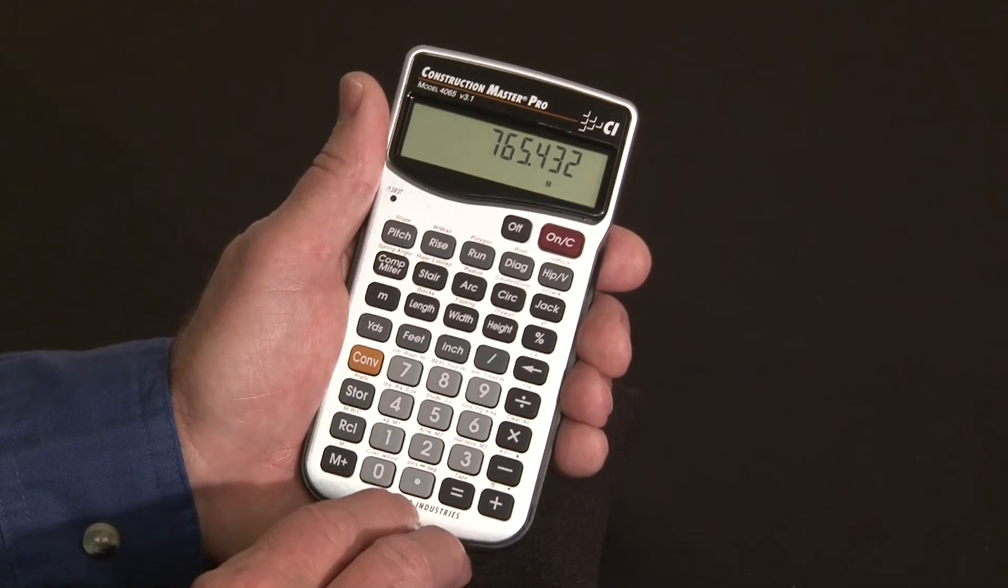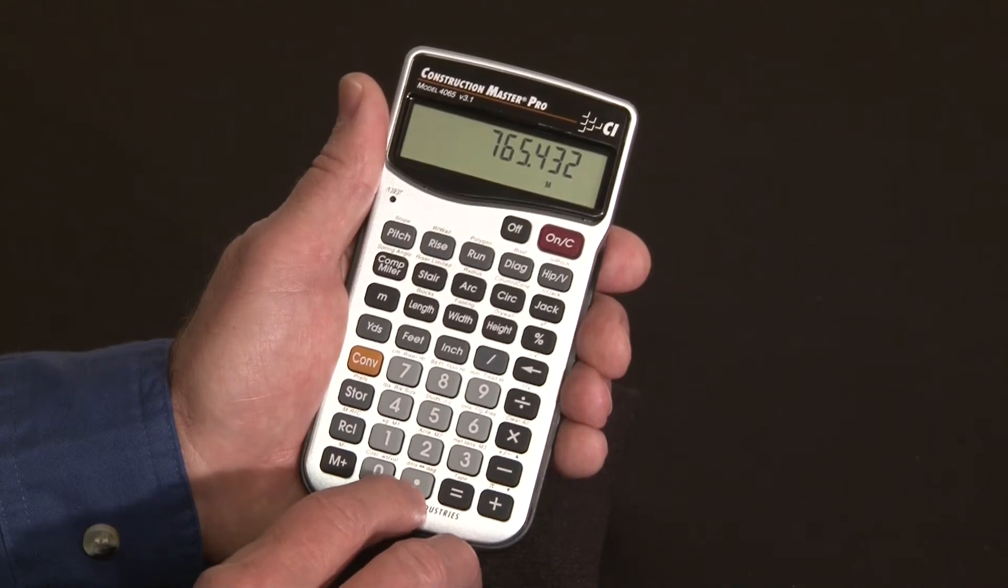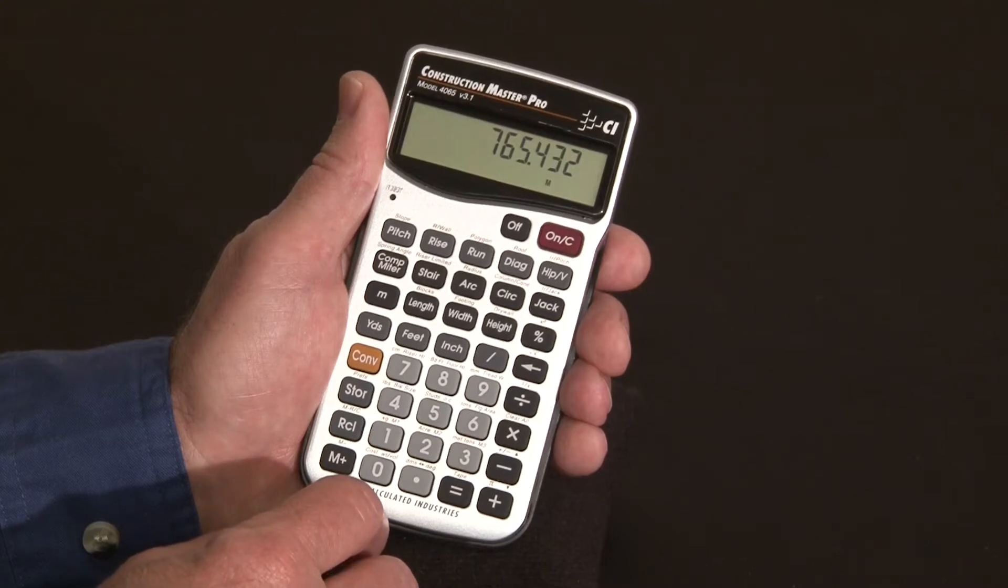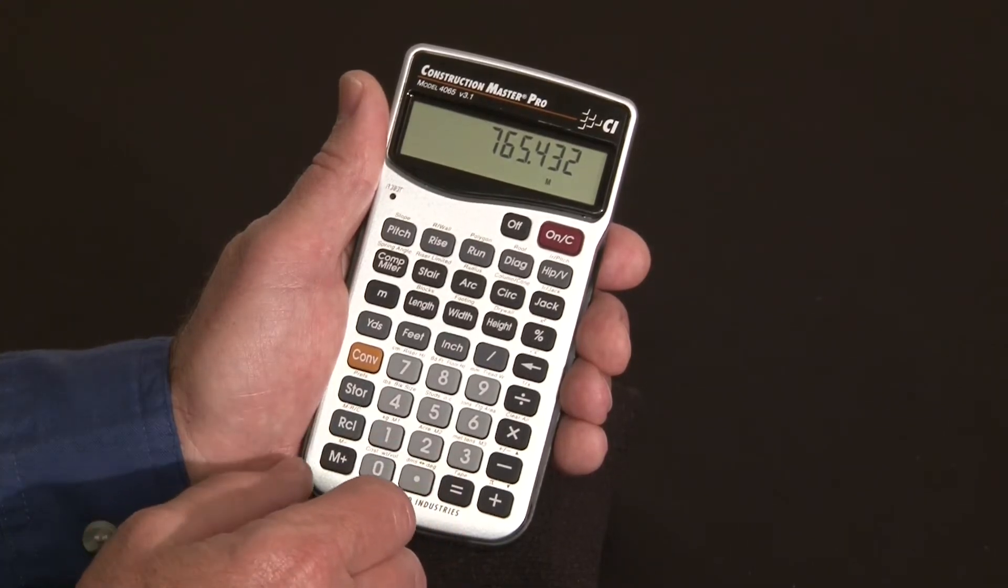The bottom key here above the decimal place has a DMS to decimal degrees conversion. There are weight and weight per volume conversions built in from pounds and kilograms and tons and metric tons and also for densities of materials like sand and gravel.